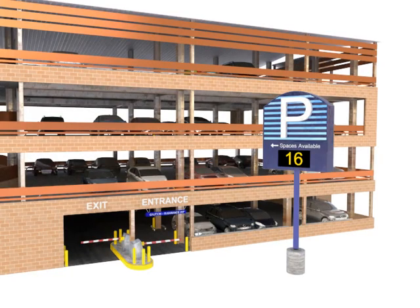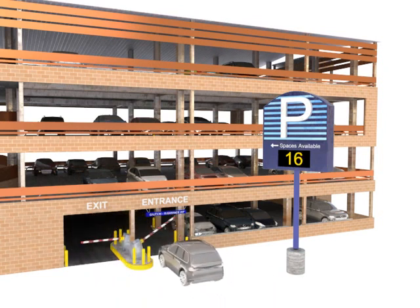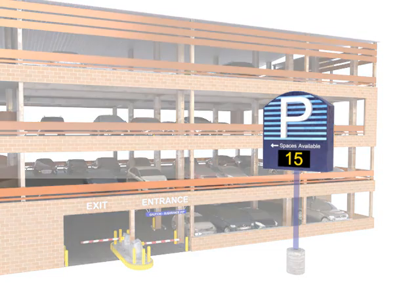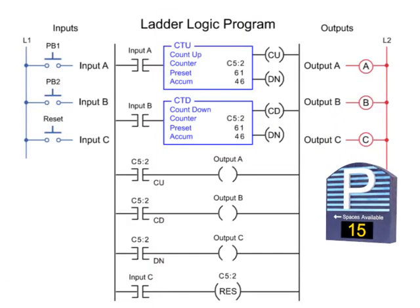Pairing a CTU and CTD in a counting sequence using the same counter file is demonstrated in a parking garage application. As vehicles enter the parking garage, PB1 is pressed to open the gate. The CTU instruction increments by one and the visual display is updated.